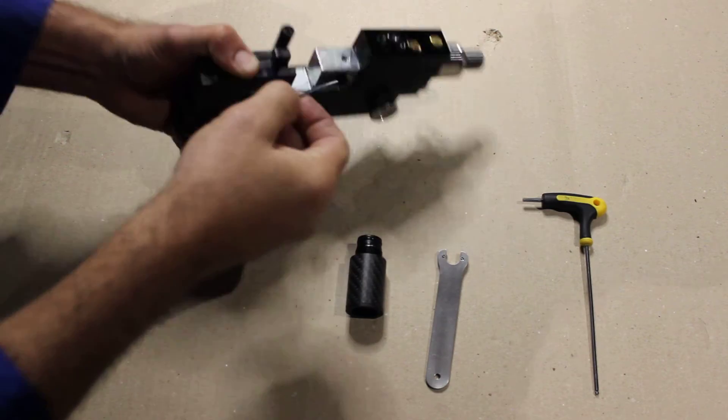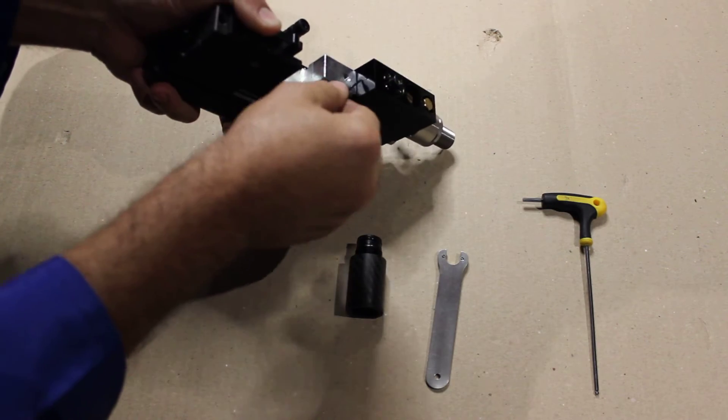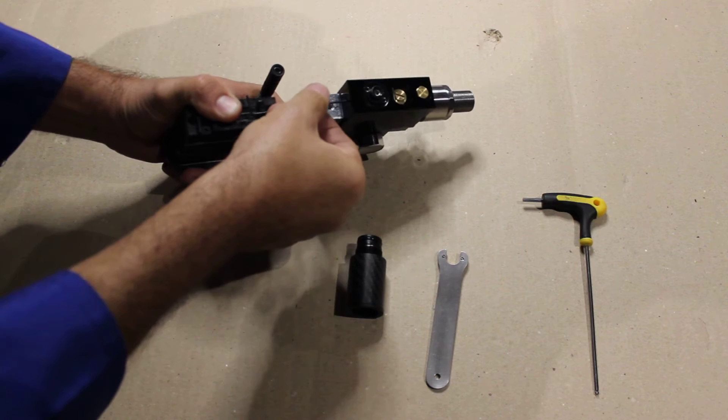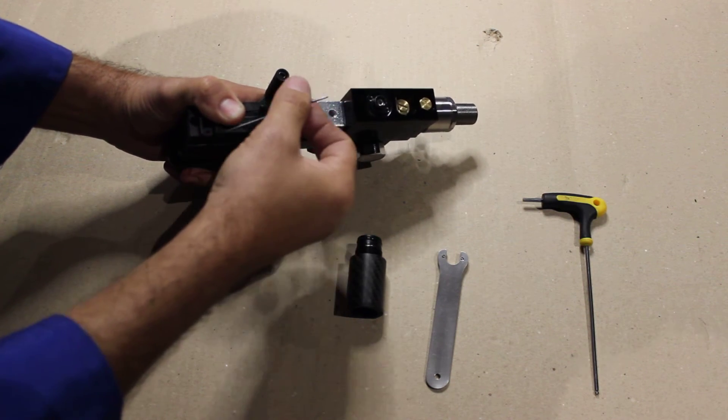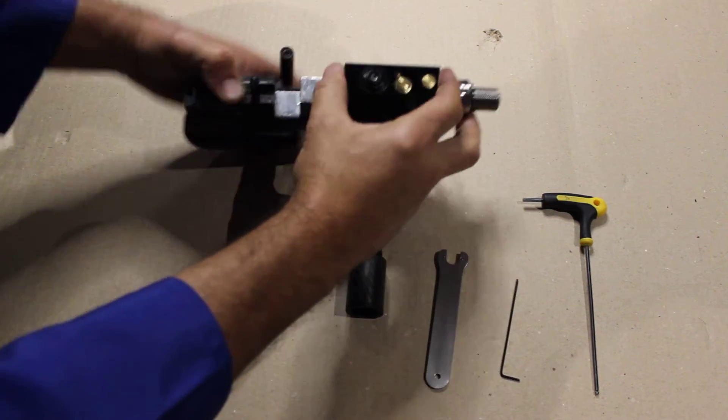So on the side here, I'm not sure if you'll be able to see it, but there's a small grub screw there that uses a 1.5 Allen key, so you need to back that out a bit to be able to remove that.